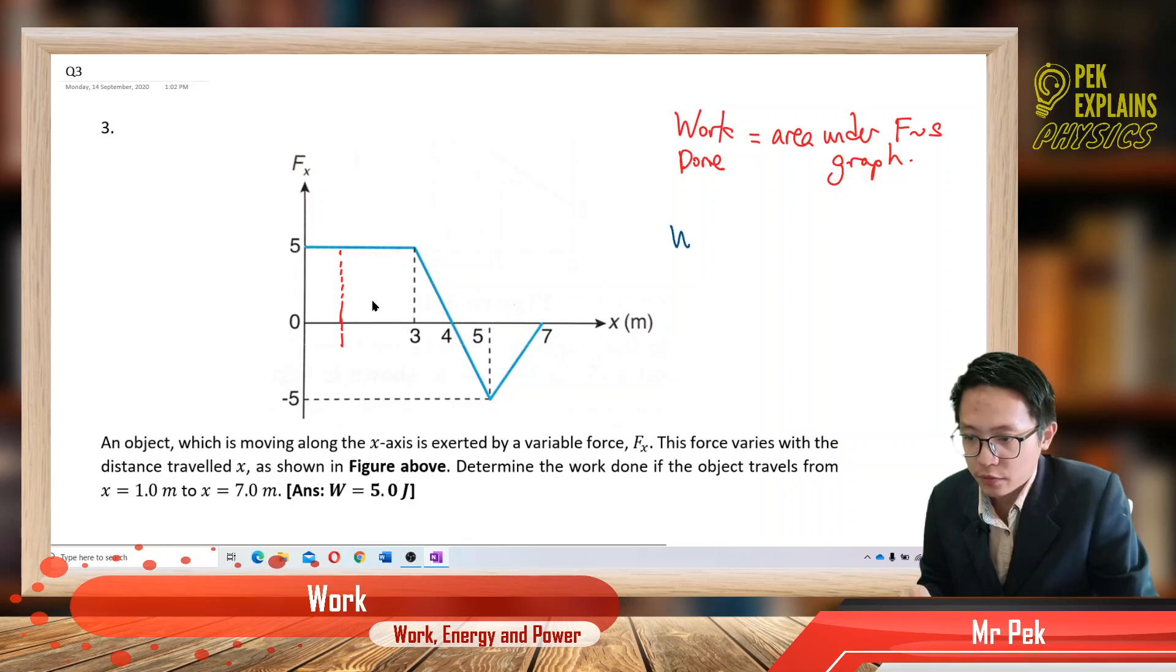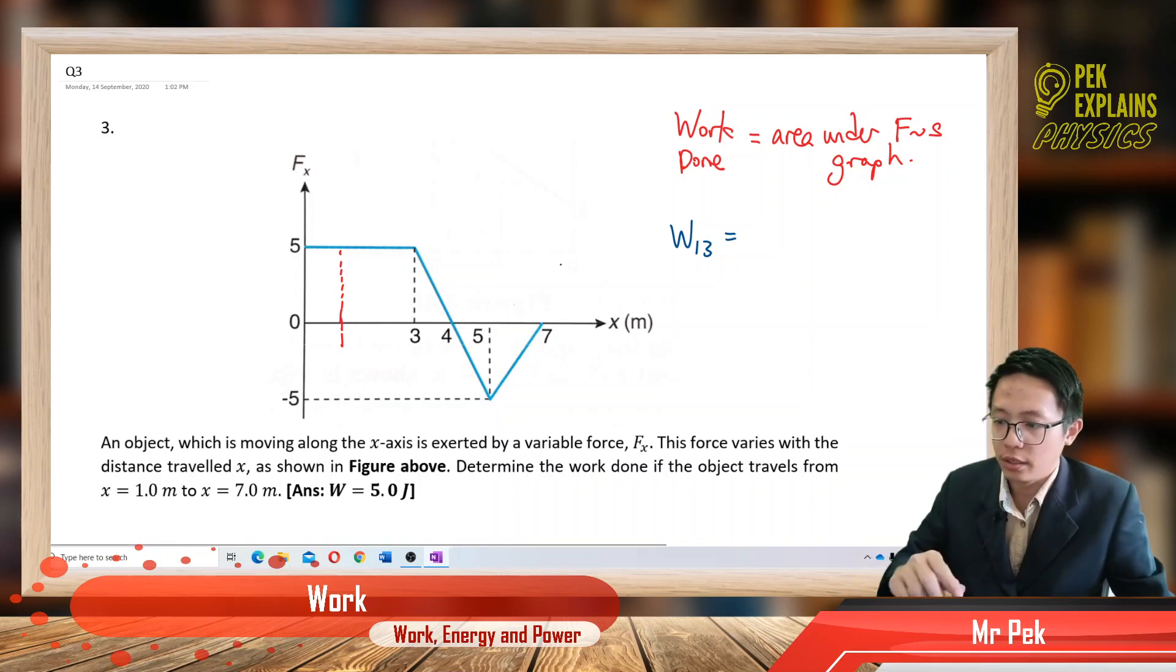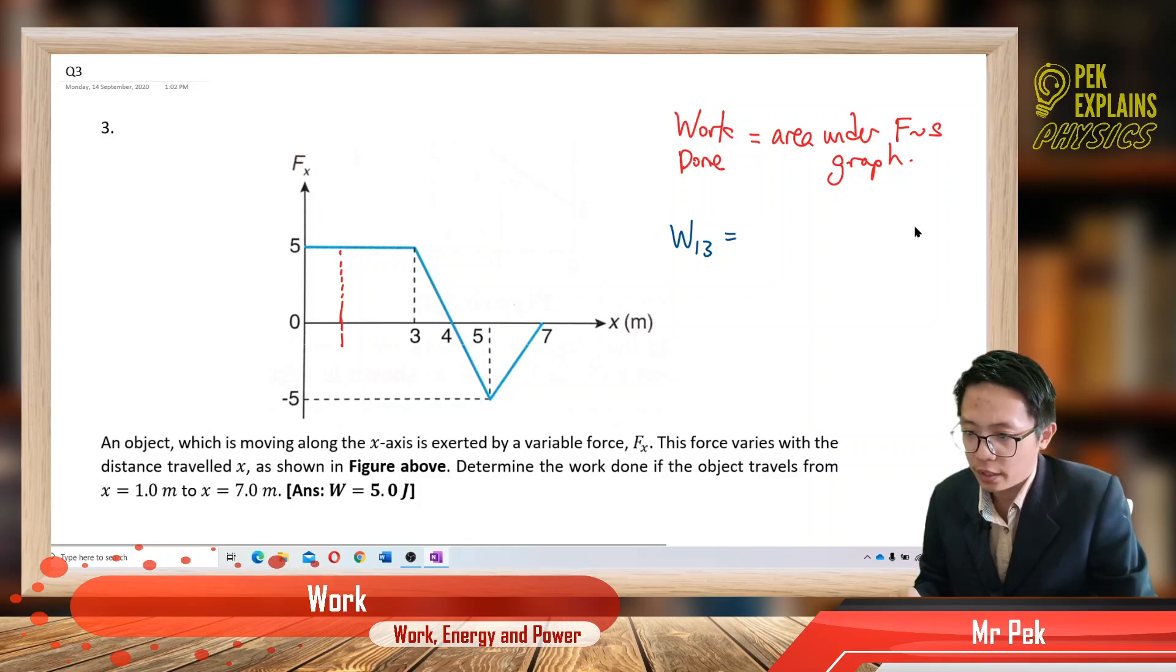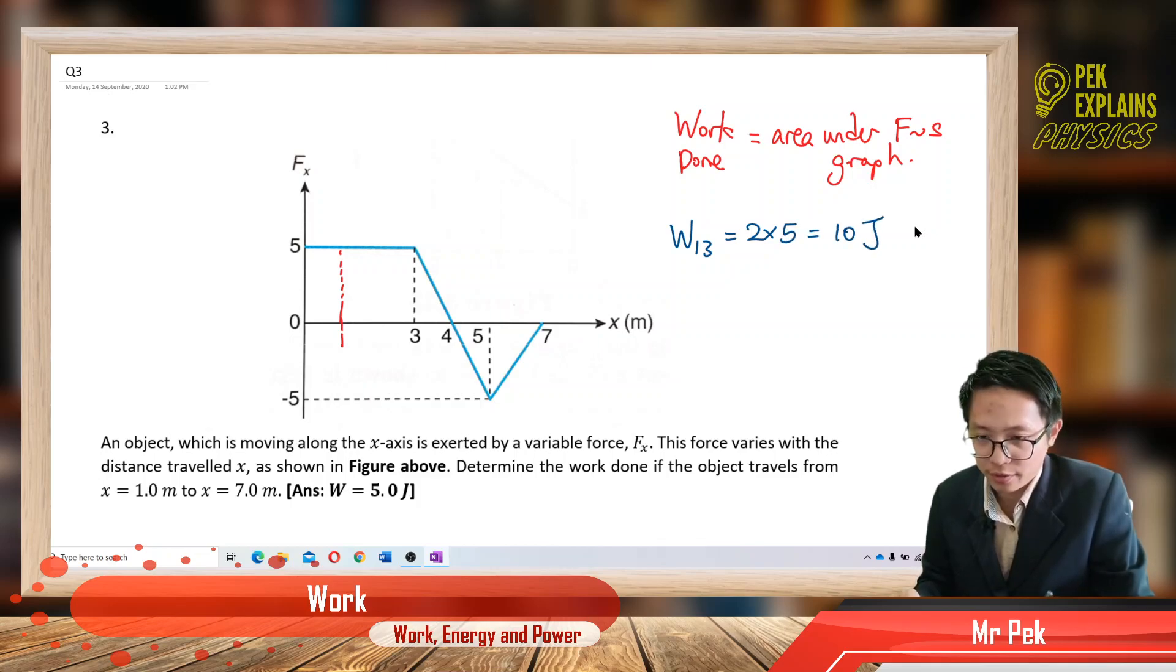All right, let us try it out. Work done for 1 to 3 meter is equal to, it's a square. So it's between 1 to 3 meter, 2 times 5. 2 times 5, you get 10 joules. You get 10 joules of work done.